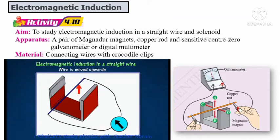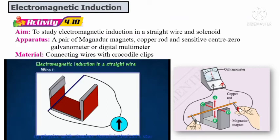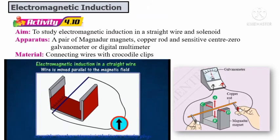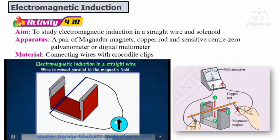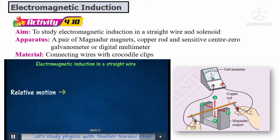Now the wire is moved upwards — you can see the pointer pointing to the left. What happens when the wire is moved parallel to the magnetic field, either in C or D direction? You can see the reading of the galvanometer equals zero, showing there is no current flow. Or if the wire is held stationary in the magnetic field, there is also no reading, showing that no current is flowing in the copper rod.